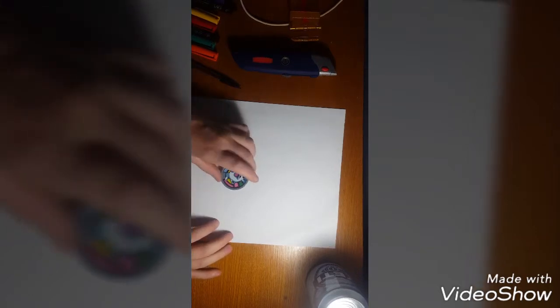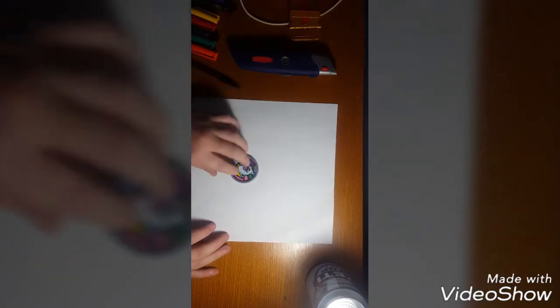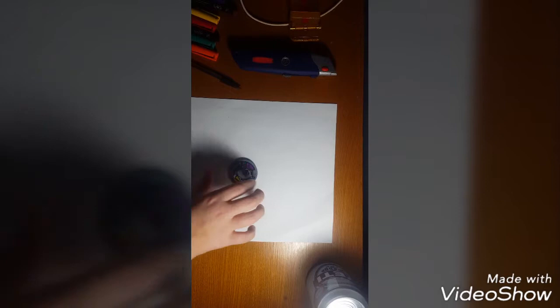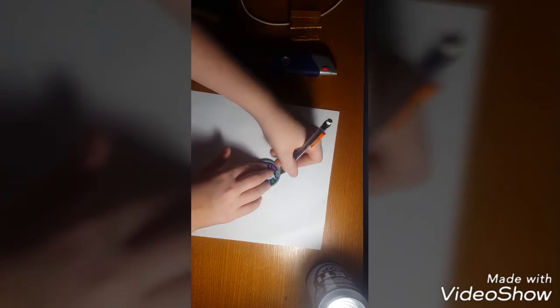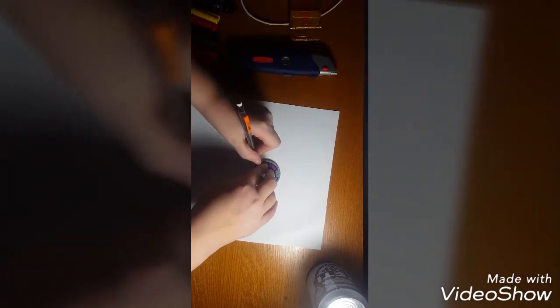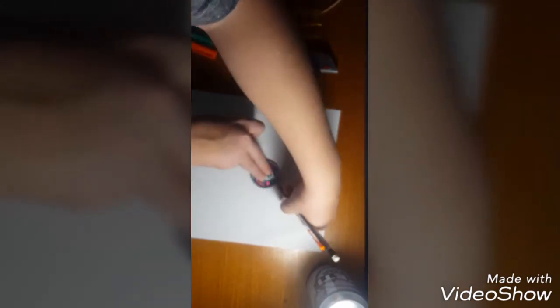Okay, so first, get your medal that you're going to use. I got two Whispers, so I'm just going to use a Whisper. So first, get your stencil pencil, and draw a circle all around it. Now, if you get it a little bit wrong, it doesn't really matter.